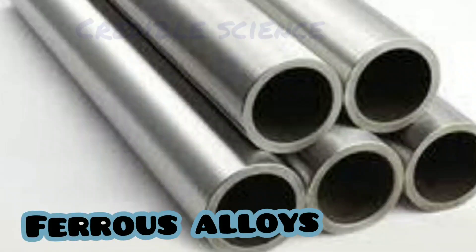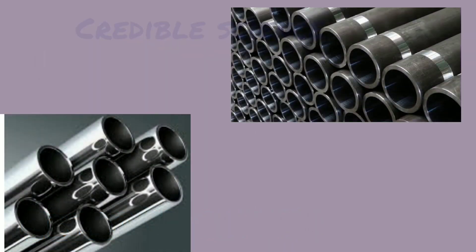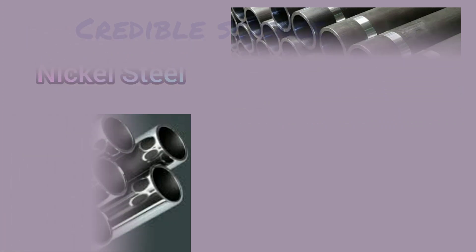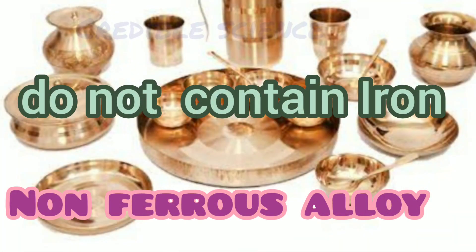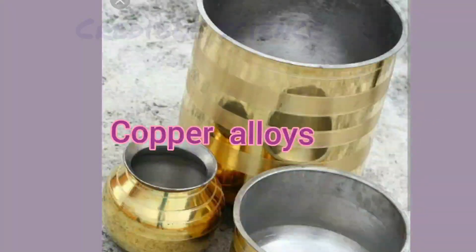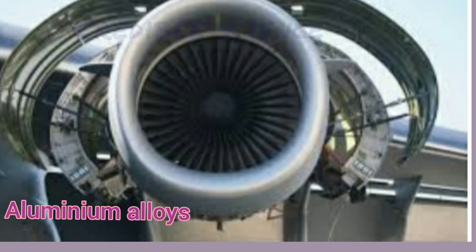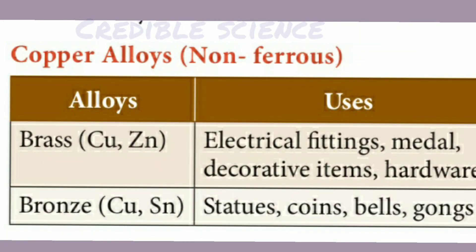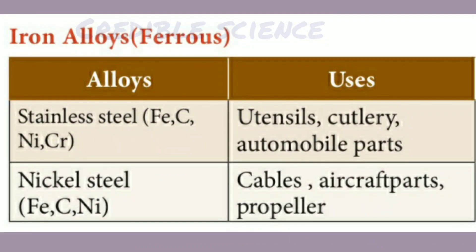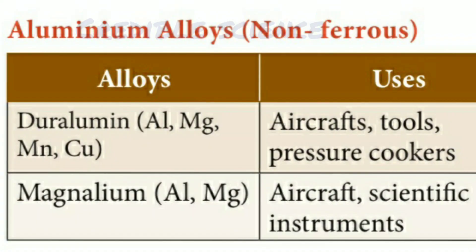Based on their components, we classify alloys as ferrous alloys and non-ferrous alloys. Ferrous alloys contain iron as an important component, while non-ferrous alloys do not contain iron. Examples of copper alloys include brass and bronze. Iron alloys, that is ferrous alloys, include stainless steel and nickel steel. Aluminium alloys include duralumin and magnalium.